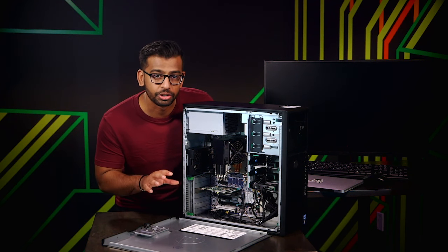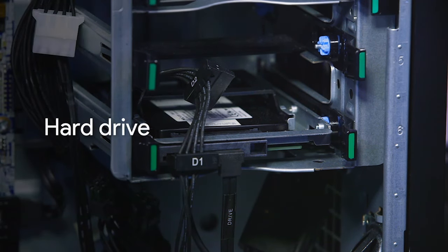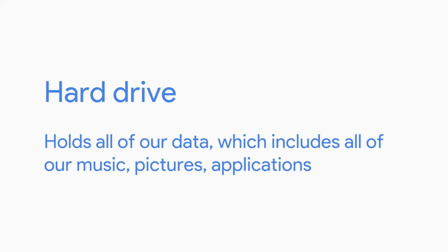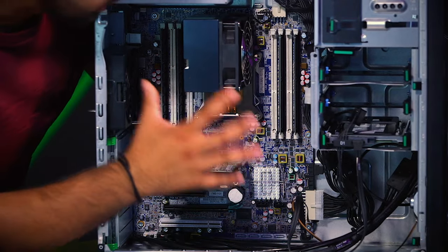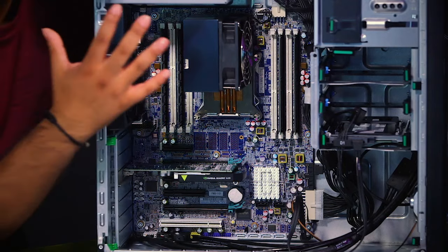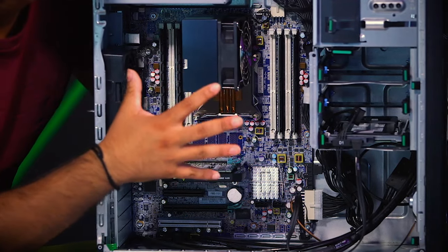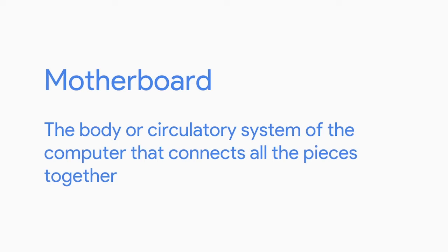When we want to store anything in long-term memory, we use this component here — the hard drive. The hard drive holds all our data, which can include music, pictures, and applications. Have you noticed this large slab here? This is our motherboard. It holds everything in place and lets our components communicate with each other. It's the foundation of our computer. You can think of the motherboard as the body or circuitry system of the computer that connects all the pieces together.